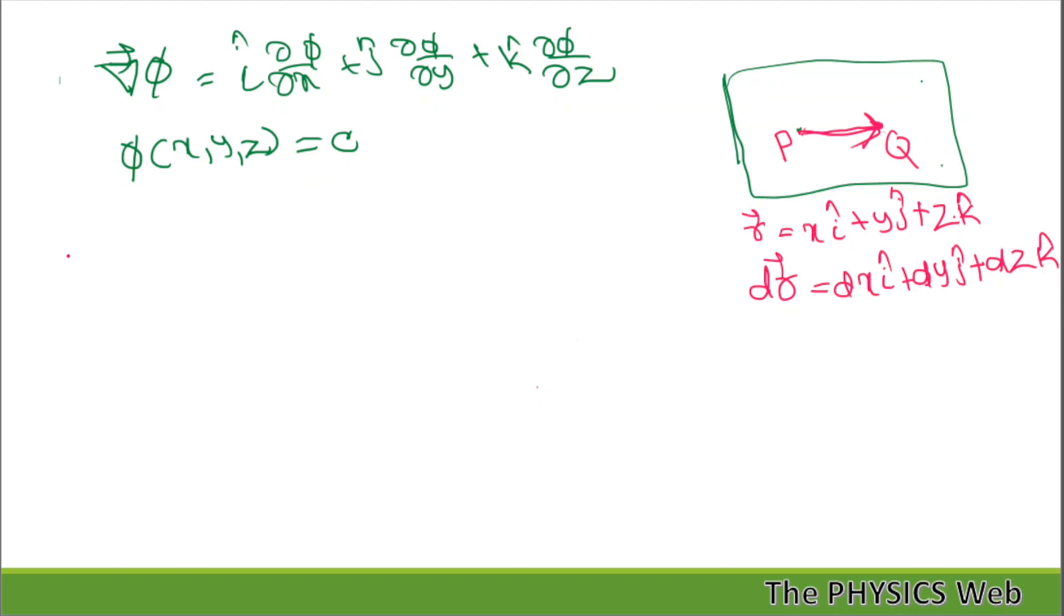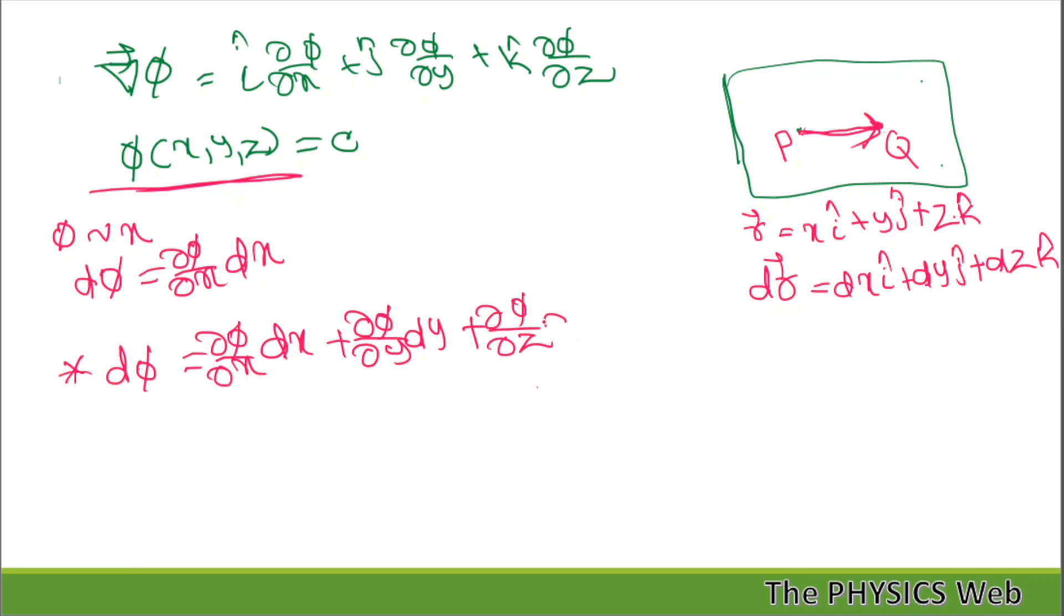Now using the partial derivative concept, we can write: if phi is a variable of x only, we can write dφ as ∂φ/∂x into dx. But here phi is a variable of x, y, and z, so we can write dφ as ∂φ/∂x dx plus ∂φ/∂y dy plus ∂φ/∂z dz.